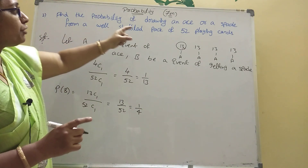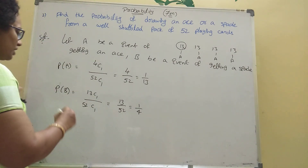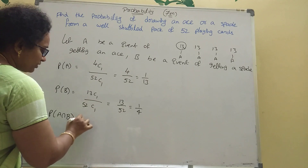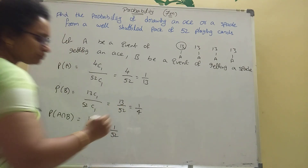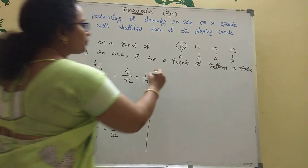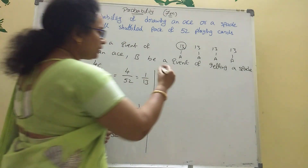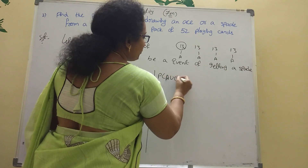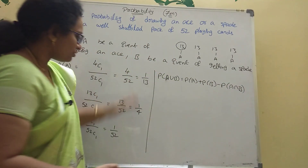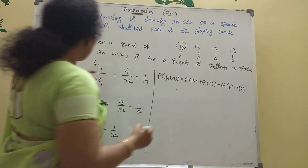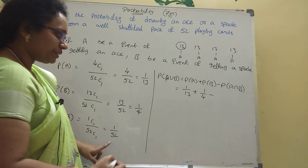Find the probability of drawing an ace or a spade. P of A intersection B is 1C1 divided by 52C1, which is 1 by 52. Using the addition theorem, P of A union B equals P of A plus P of B minus P of A intersection B.